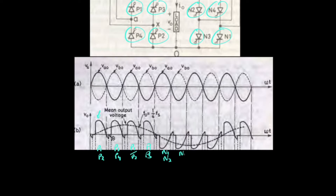For the first four half cycles, we have operated the positive group thyristors. For the next negative half cycles, we will operate the negative group thyristors N1, N2, N3, N4, N1, N2, N3, N4. When we take the average of these positive and negative half cycles, the net frequency is the input frequency divided by 4. With this technique, we can step down the frequency to one-fourth of the original frequency.